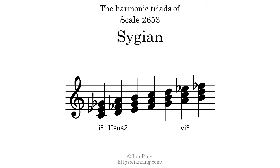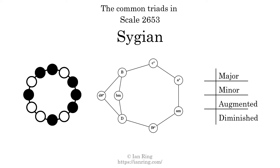Here are the common triads present in this scale. The diagram in the center is a graph of parsimonious voice leading between triads. There are two major triads. There are two minor triads. There are no augmented triads. There are four diminished triads. Here is a Hamiltonian path of parsimonious voice leading that uses all the triads.